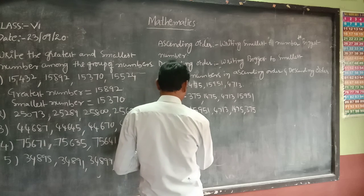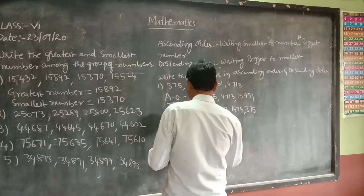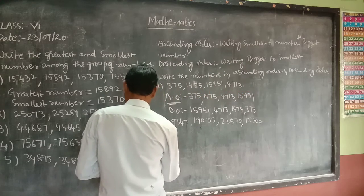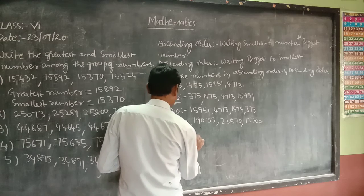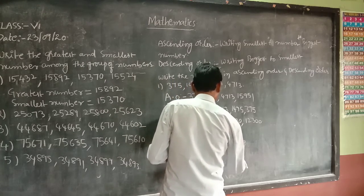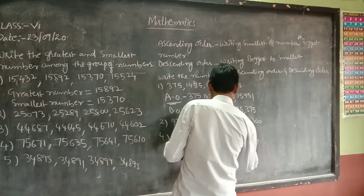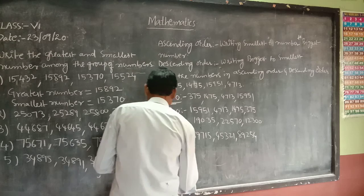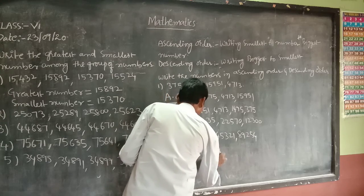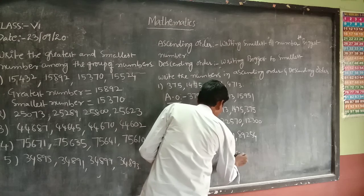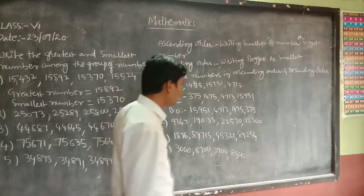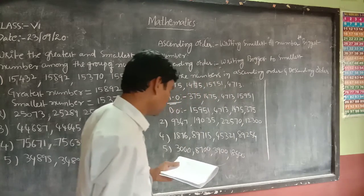Here are three more questions to do on your own. First: 9,347; 19,035; 22,570; 2,300. Second: 1,876; 89,715; 45,321; 89,254. Try these the same way we practiced.